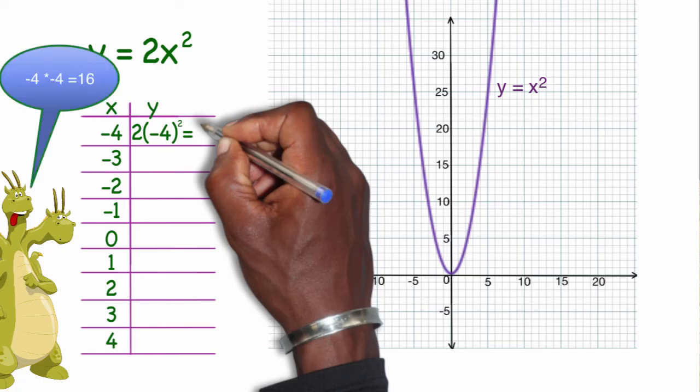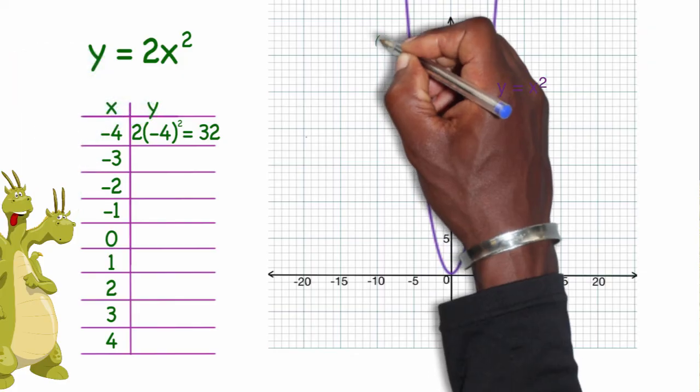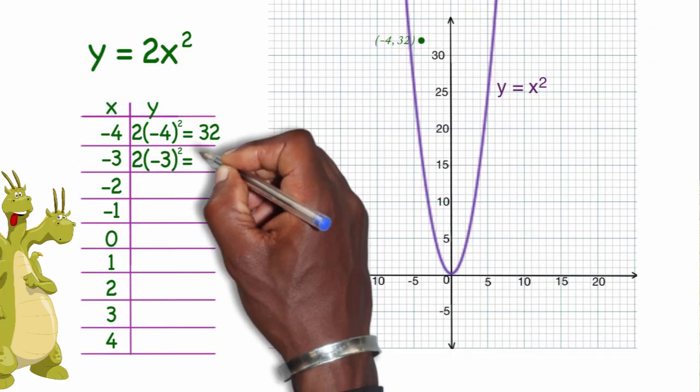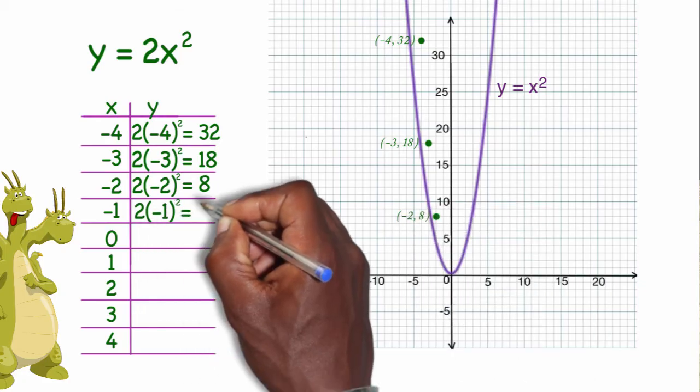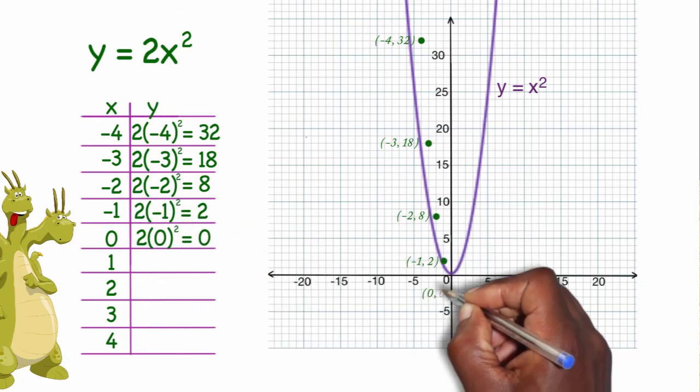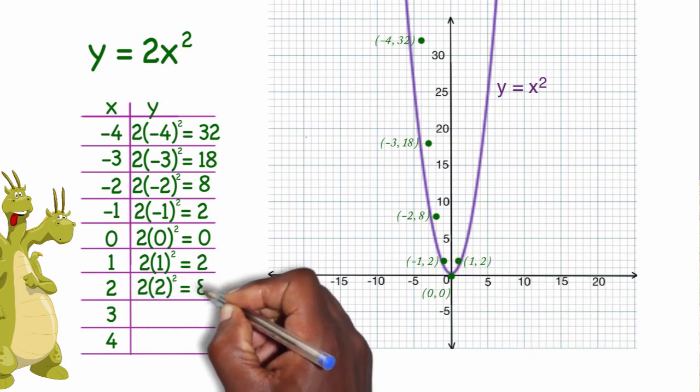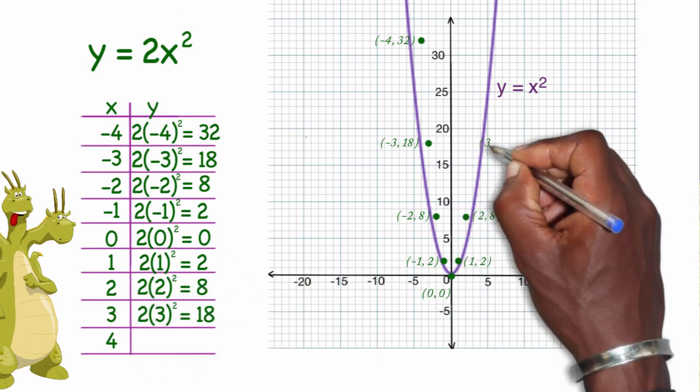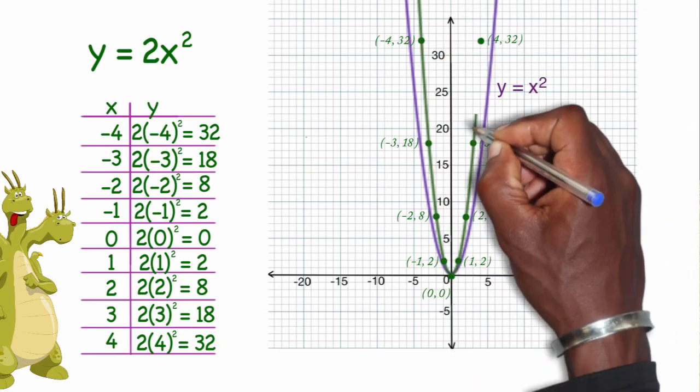So in following order of operations, you get 32. So my new coordinates now are negative 4, 32, negative 3, 18, negative 2, 8, negative 1, 2, 0, 0, 1, 2, 2, 8, 3, 18, 4, 32. I'll connect these coordinates here.